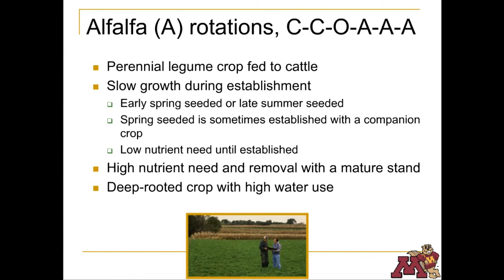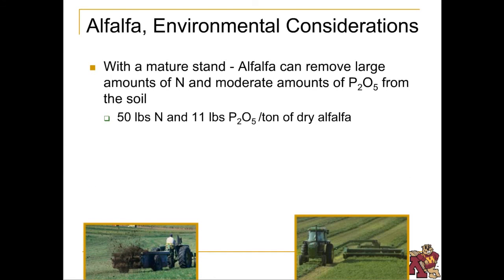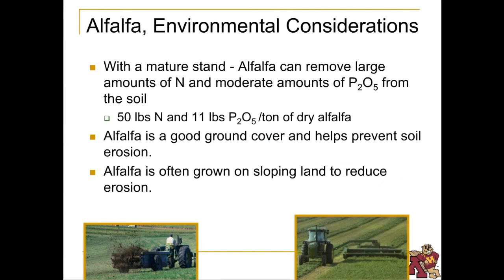Alfalfa is a large user of water, but because of its deep root system, it can survive periods of mild drought. Despite its ability to create its own nitrogen, alfalfa will remove large amounts of N from the soil if it's there. Alfalfa also removes some phosphorus from the ground. Because of the good ground cover, there is little risk of soil erosion. Growing alfalfa is encouraged in southeast Minnesota and other areas where the land is hilly.